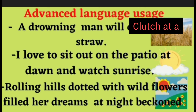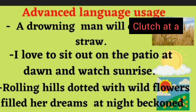'A drowning man will clutch at a straw' — meaning a person who is drowning will grab even a small straw hoping it will be a great help. Even a straw would not be a big help, but that is the idea. 'I love to sit on a patio at dawn and watch the sunrise' — sitting on a terrace before sunrise and watching the sun rise — I love that.